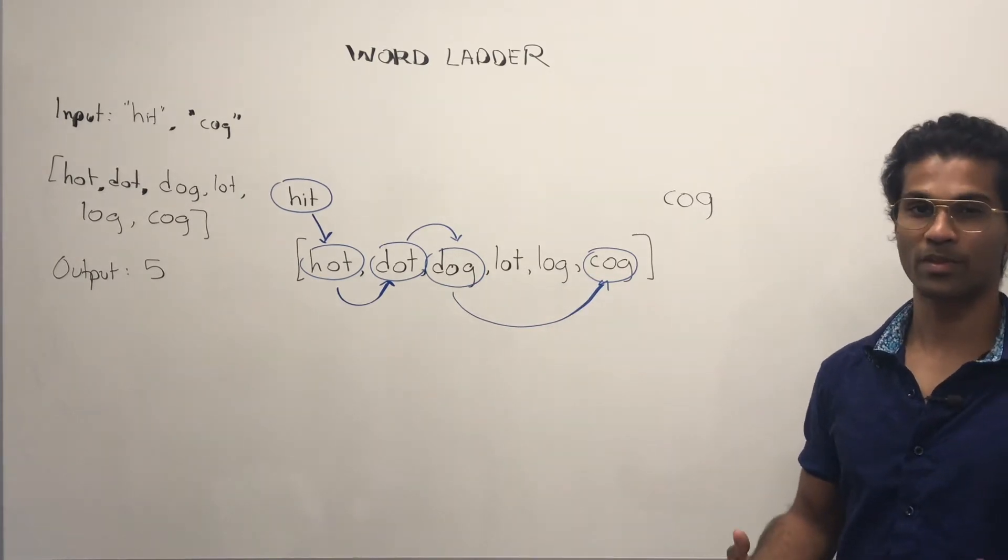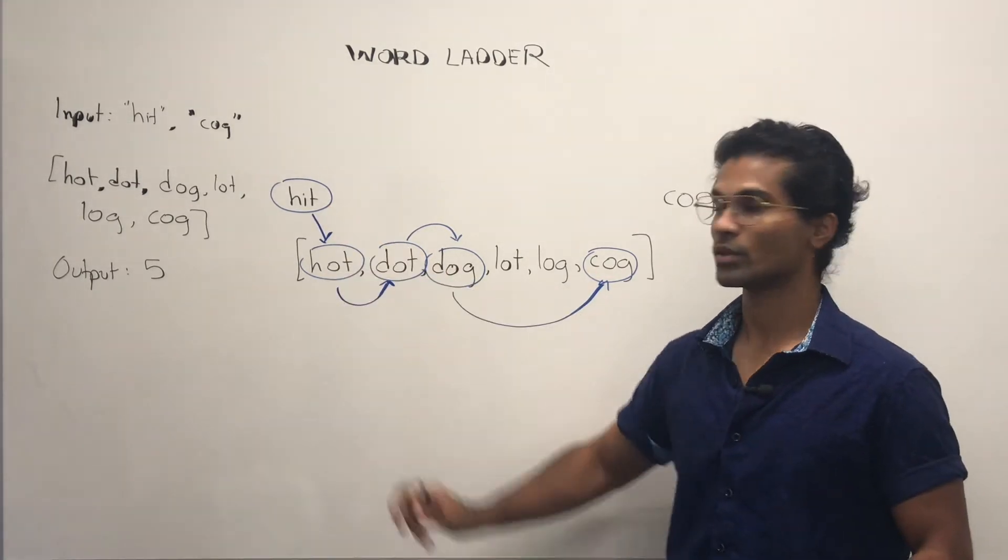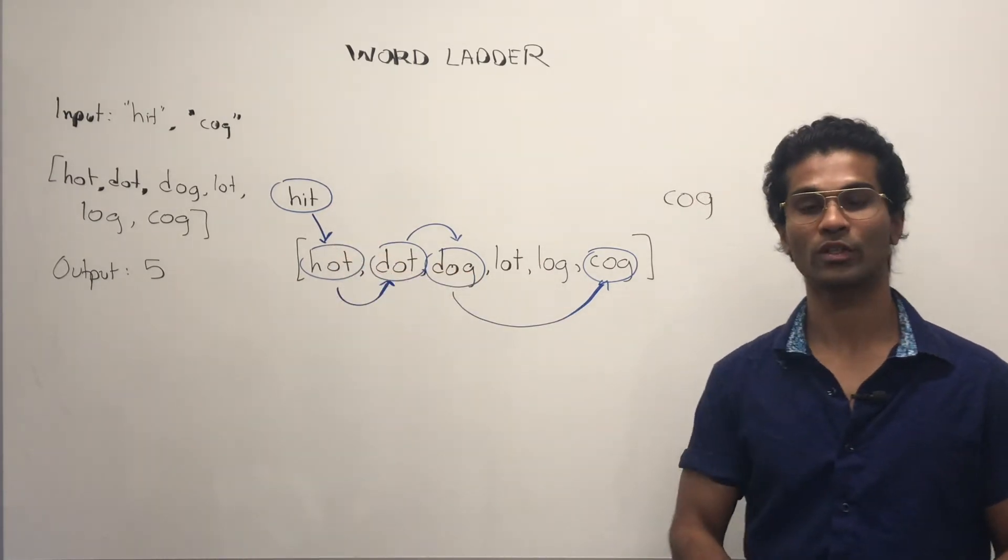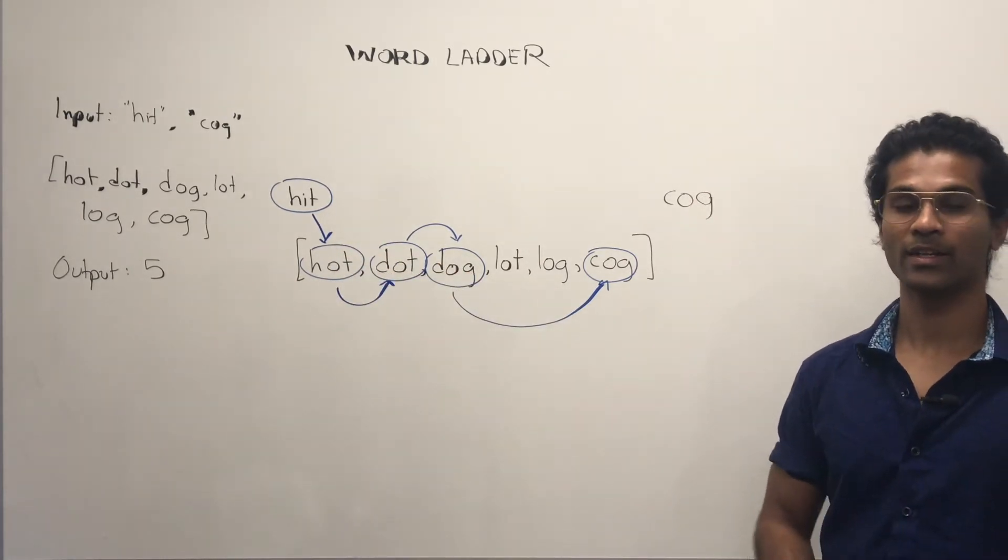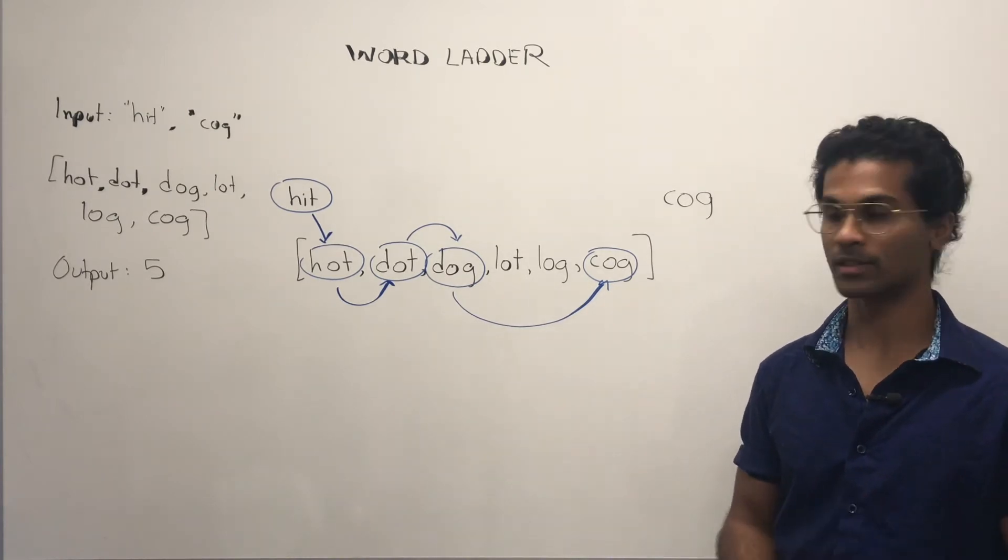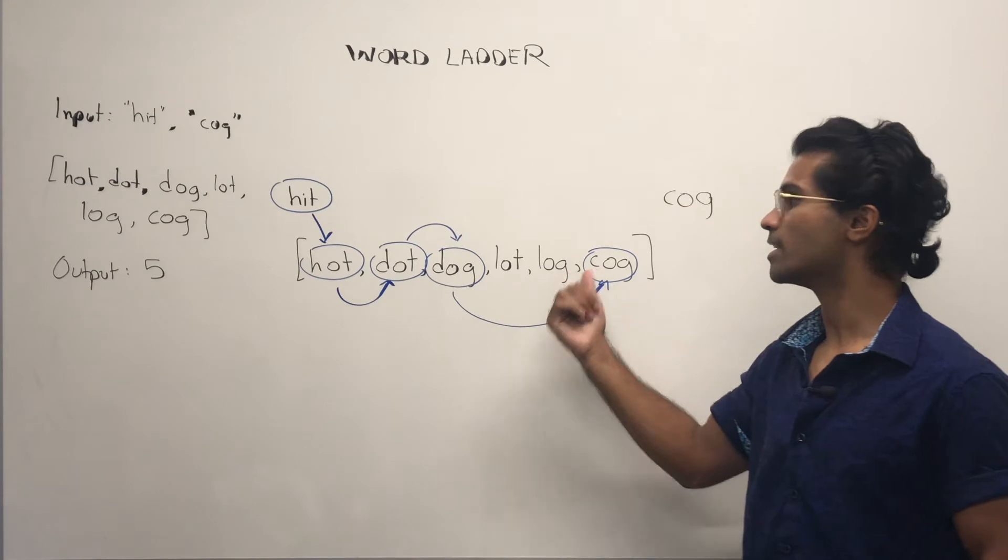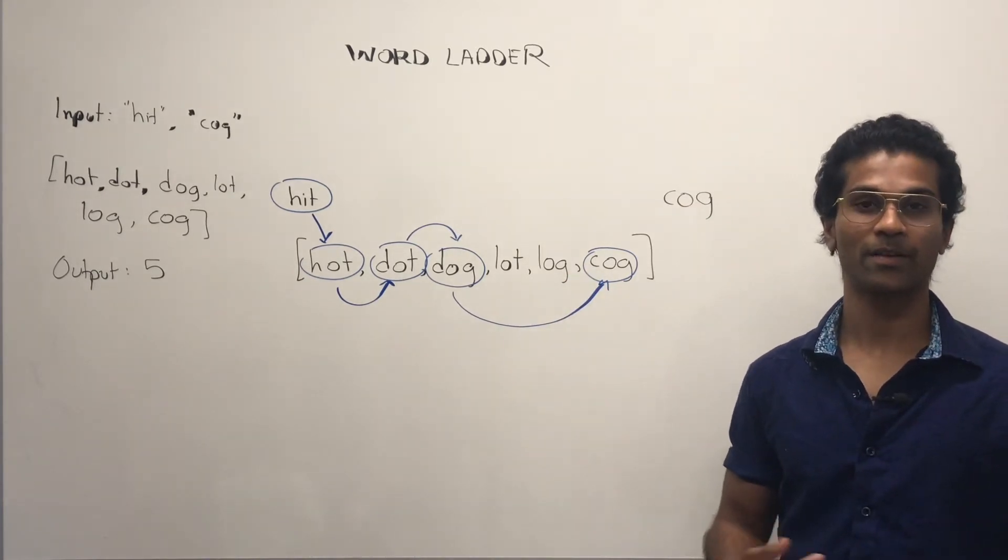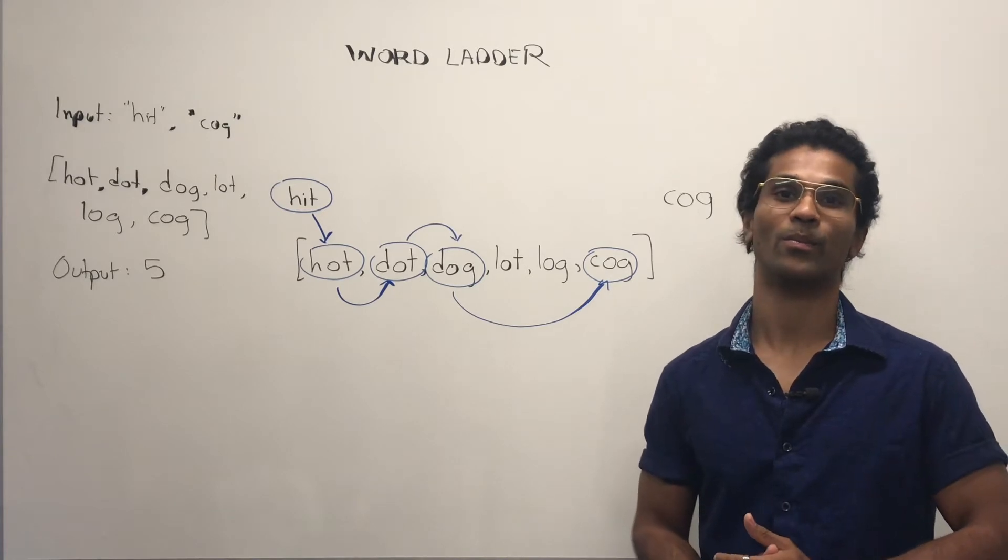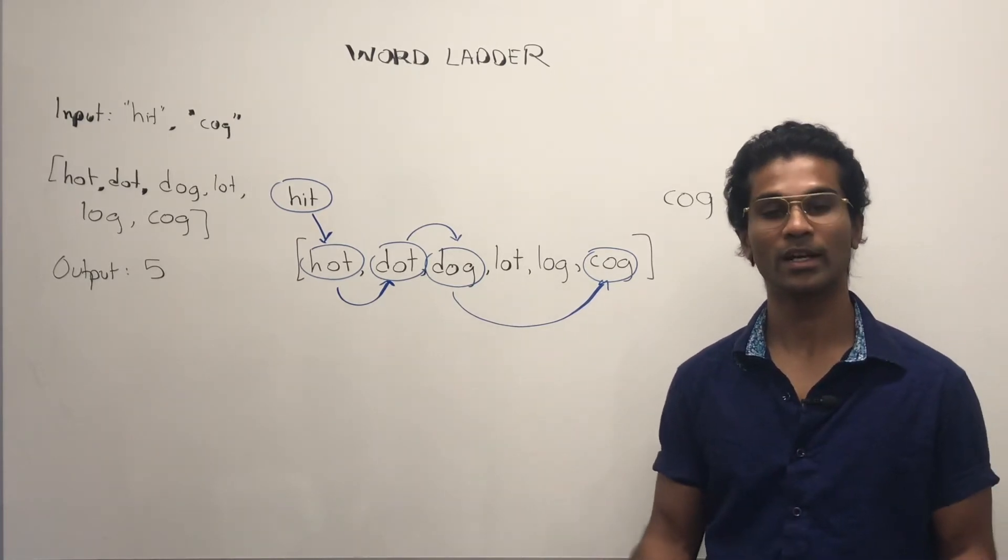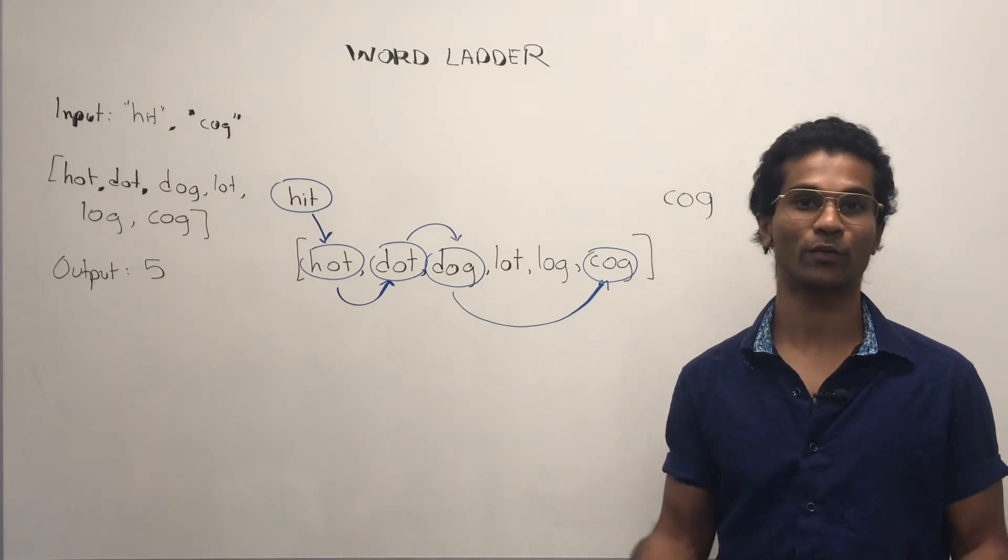Now you observe something like words which look like nodes and this transformation which looks like an edge. So we have ourselves a graph and because we want the distance from the origin to the end we're gonna go for a layer focused BFS. If you don't know layer focused BFS I'll link it down below, feel free to take a look.